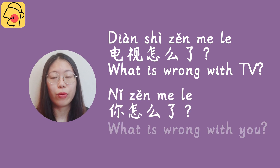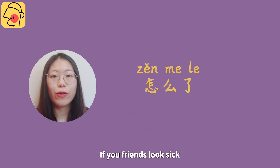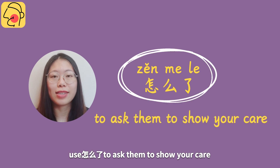你怎么了？ — What's wrong with you? If your friends look sick, use 怎么了 to ask them and show your care.